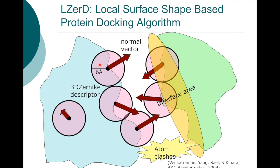LIZARD tries to generate lots of models and for each docking model considers whether the local surface is pointing toward each other at 180 degrees, the local curvature and surface landscape fit nicely with each other, the interface area, and then penalizes atom clashes.